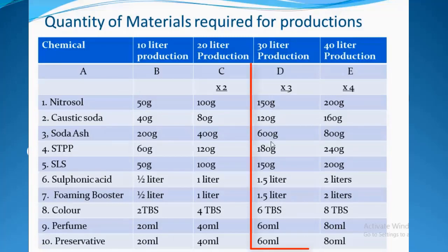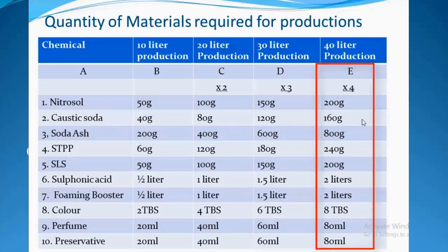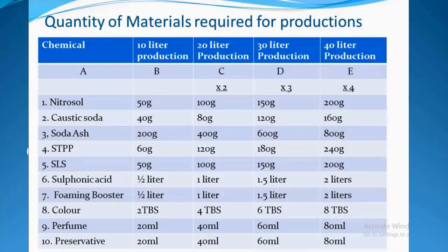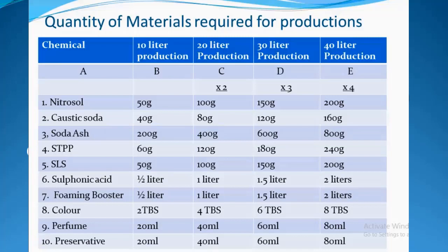In column E we have 40-liter production. To produce 40 liters of liquid soap, multiply all quantities in column B by 4. For example: nitrosol = 50 × 4 = 200g; caustic soda = 40 × 4 = 160g; soda ash = 200 × 4 = 800g; STPP = 60 × 4 = 240g. Basically, this is what you do if you want to produce a large volume of product.